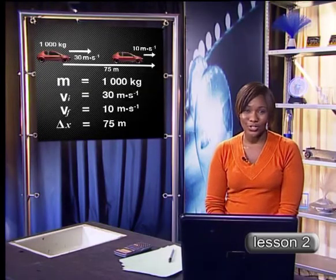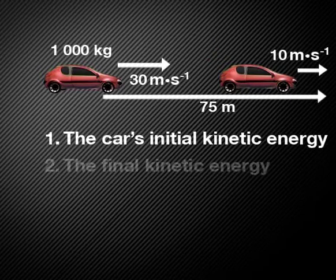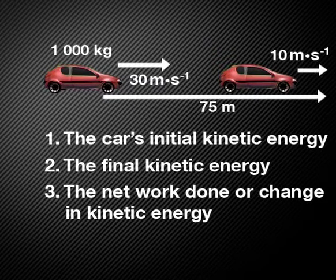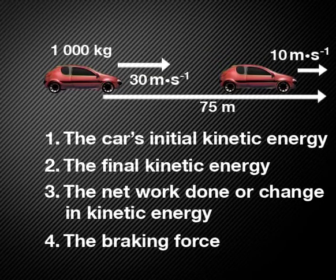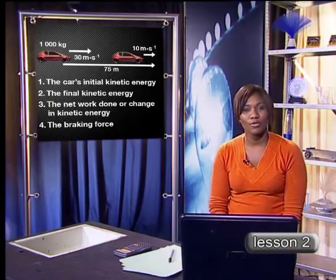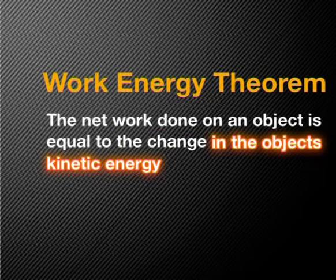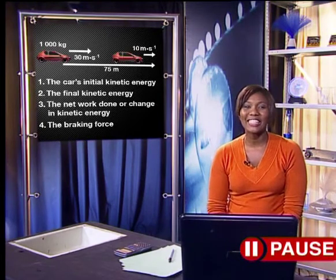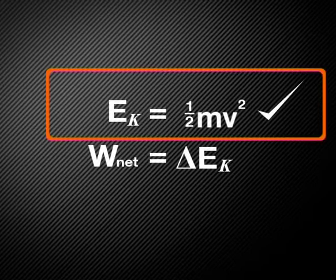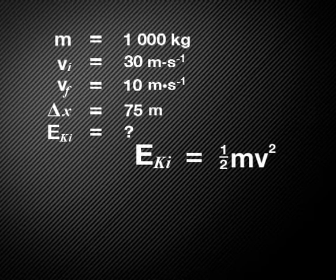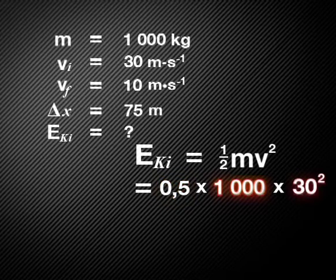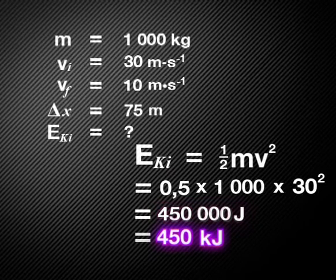Have a look at the kinds of questions you could be asked to solve: find the car's initial kinetic energy, find the car's final kinetic energy, find the net work done — that is, the change in kinetic energy — and find the braking force. We can use the work-energy theorem to solve these. Using kinetic energy equals half mass times velocity squared, we substitute to get half times 1,000 times 30 squared, giving us 450,000 joules, which is 450 kilojoules.